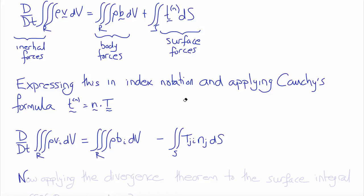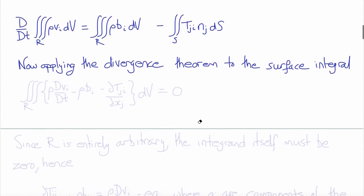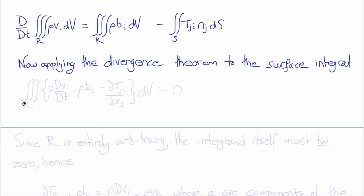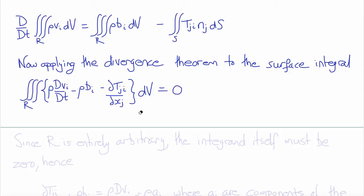Now, as we did before when we derived the equilibrium equations, we apply the divergence theorem to convert the surface integral into a volume integral, which will yield three volume integrals that we can collect together as a triple integral over R of rho dV_i/dt — that's the inertial force term — minus rho B_i, minus del T_ji / del x_j. So this is the divergence of the stress tensor integrated with respect to the volume, equal to zero.